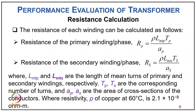The resistance of the primary winding per phase Rp equals rho × LMTp × Tp divided by Ap, and the resistance of the secondary winding per phase Rs equals rho × LMTs × Ts divided by As. Here LMTp and LMTs are the mean turn lengths of primary and secondary windings respectively, Tp and Ts are the corresponding number of turns, and Ap and As are the cross-section areas of the conductors. The resistivity rho of copper at 60°C is 2.1 × 10⁻⁸ ohm·meter.